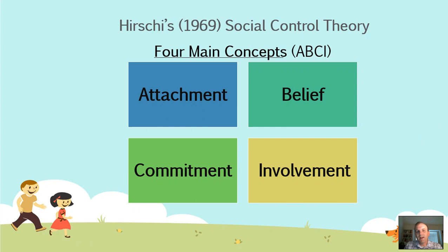Within Hirschi's social control theory there are four main concepts. A useful memorization tool is A, B, C, I — attachment, belief, commitment, involvement. These are the four domains where bonds exist according to Hirschi's early work. They help influence normative, pro-social, idealized behavior and non-delinquent behavior.